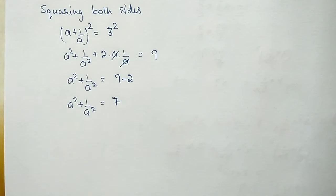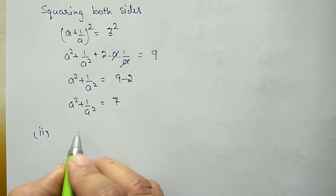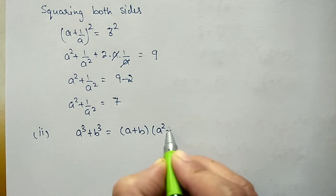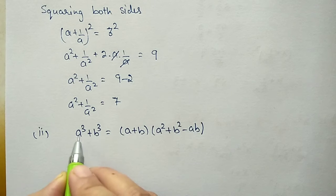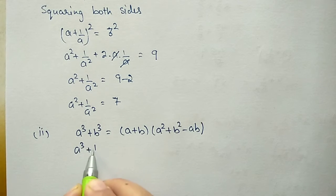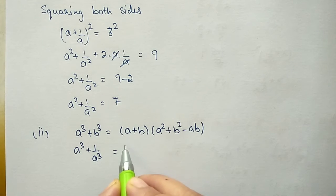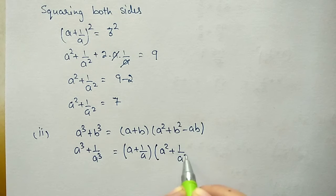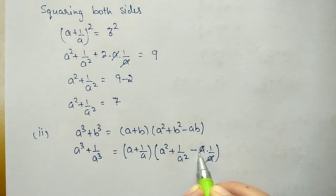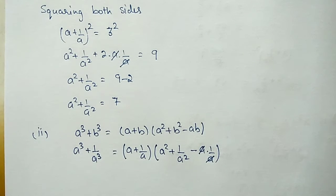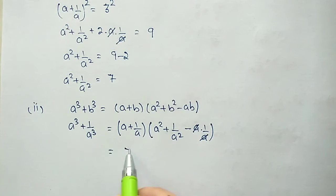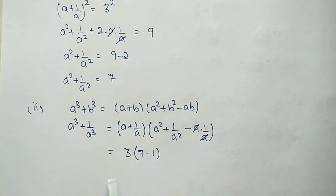For the second part, we use the formula a³ + b³ = (a + b)(a² + b² − ab). With a = a and b = 1/a: a³ + 1/a³ = (a + 1/a)(a² + 1/a² − a × 1/a). The a × 1/a cancels to 1, so we substitute: a + 1/a = 3, a² + 1/a² = 7, minus 1 gives 6. So 3 × 6 = 18.